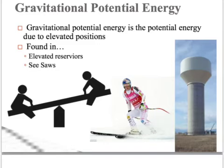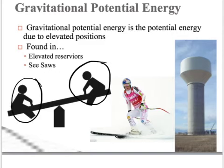Gravitational potential energy is the last type — it's potential energy due to elevated positions, and it's maybe the most obvious of the three. The higher up you go, the more gravitational potential energy you have. Examples include elevated reservoirs or water towers and seesaws. As the person who is up on the seesaw goes higher, they have more gravitational potential energy. As they switch positions and come down, they will have more kinetic but less potential energy, while the other person going up gains gravitational potential energy.